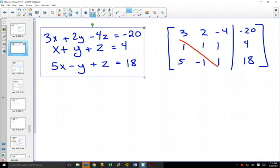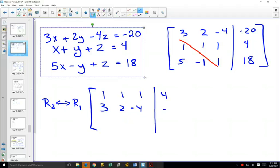Our goal is to get everything below the diagonal to be zeros. Now, a couple of things for doing this. One thing in the very first operation that I'm going to do is I'm going to take row 2 and switch it with row 1. That's going to just put this 1, 1, 1, 4 here and 3, 2, negative 4, negative 20, and 5, negative 1, 1, 18 there.